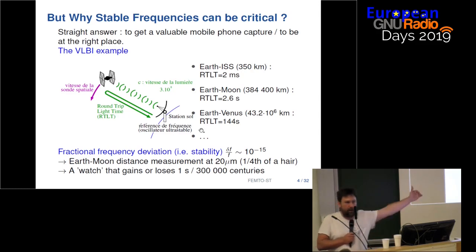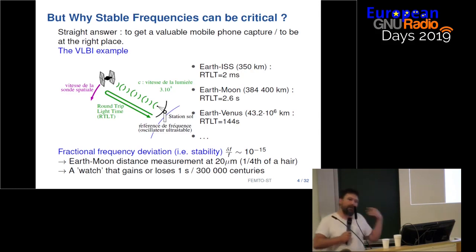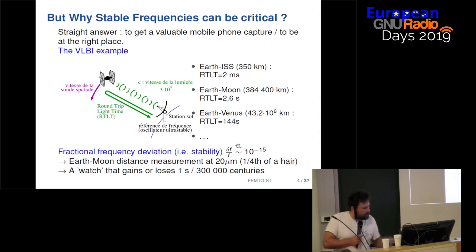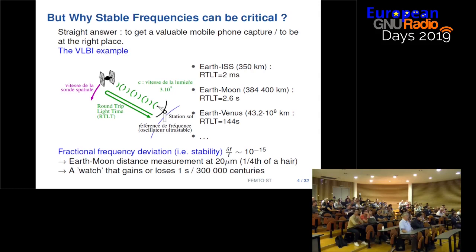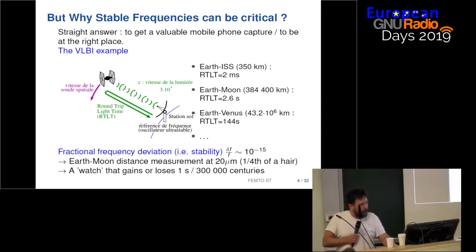Venus is just next door to us — it takes 144 seconds round trip. So during 144 seconds you need a really stable frequency. To give you some idea: today we achieve around 10 to the minus 15 frequency deviation. That represents measuring the distance between the Moon and Earth to just 20 micrometers, or a watch that gains or loses a second every 70 million years. Of course this is not for GPS, but more for legal and fundamental physics applications.